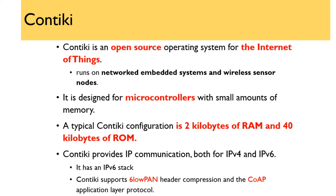Contiki is an open source operating system basically designed for wireless networks, and it is now widely used for Internet of Things. It runs on embedded systems and wireless sensor network nodes, designed for microcontrollers that consume small amounts of memory. A typical Contiki configuration requires only 2 kilobytes of RAM and 40 kilobytes of ROM. It provides IP communications for both IPv4 and IPv6, and also supports 6LoWPAN header compression and CoAP application layer protocol.